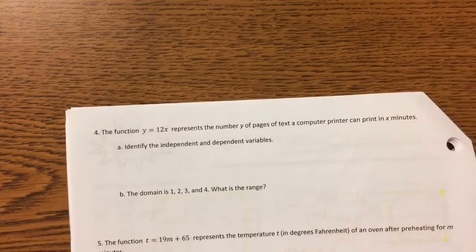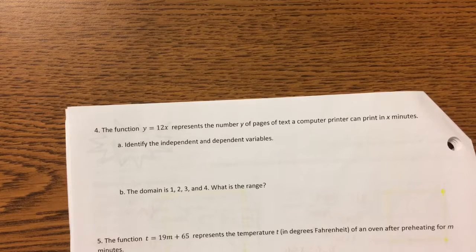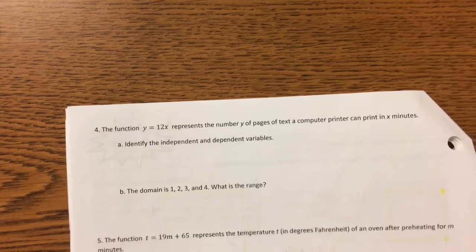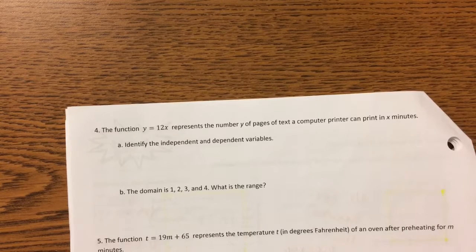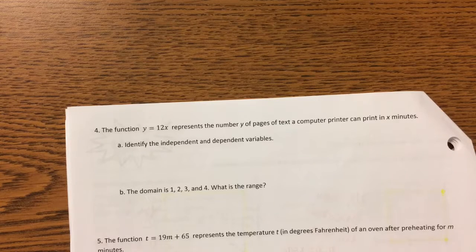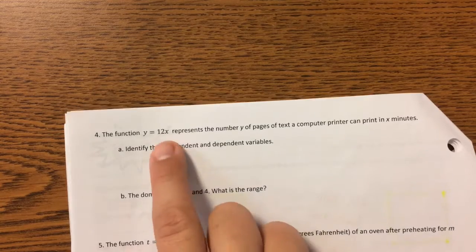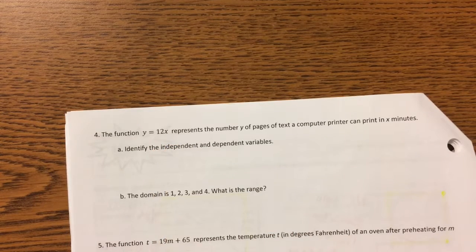The function y equals 12x represents the number of pages a computer printer can print in x minutes. So y equals 12x — how many pages can the printer print in one minute? 12, right, because you're basically multiplying 12 pages by the number of minutes. So we need to identify the independent and dependent variables here.